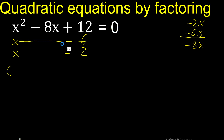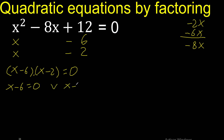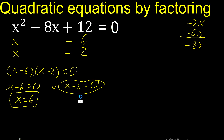Therefore, set equal to 0. By the zero product property, this factor equals 0 or this factor equals 0. Here x equals 6, here x equals 2.